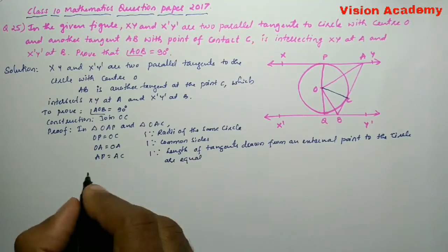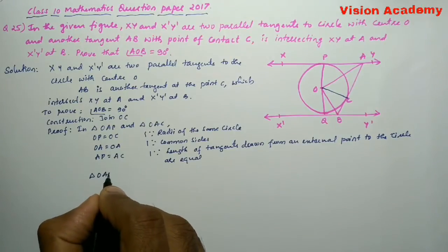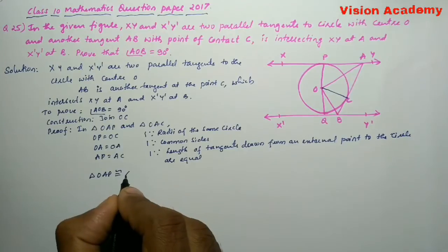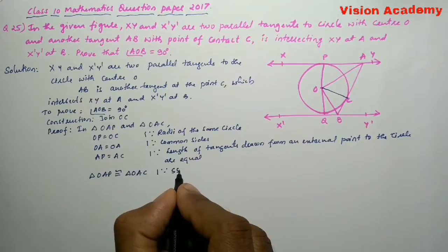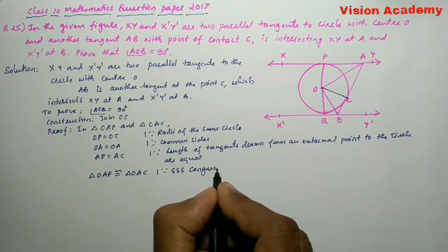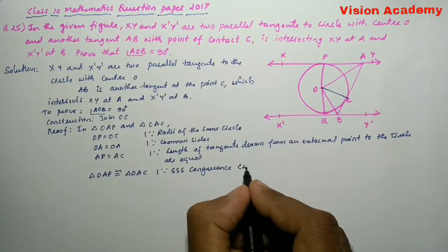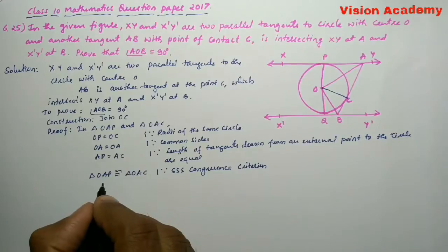Next, AP is equal to AC because length of tangents drawn from an external point to the circle are equal. Therefore, triangle OAP is congruent to triangle OAC. It is because of side side side congruence criterion.